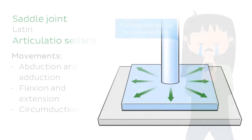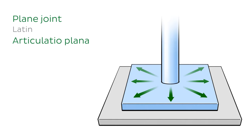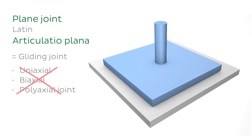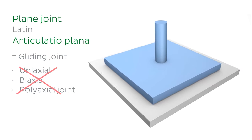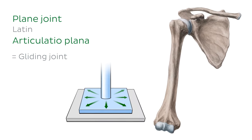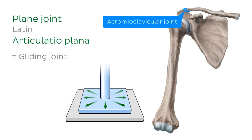The final type of joint is the plane joint, also known as the gliding joint. This type of joint doesn't move around an axis and only permits movement along the plane of the articular surface. Therefore, it cannot be classified as uniaxial, biaxial, or polyaxial. Instead, the plane joint performs a sliding or gliding movement where one bone moves across the surface of another. An example is the acromioclavicular joint, which increases the flexibility of the shoulder.